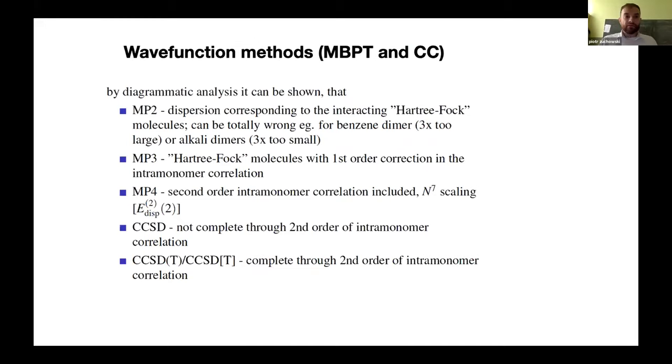So, to what extent is dispersion present in many-body perturbation theory? We have variational theory and coupled cluster. In MP2, the dispersion corresponds to the monomers which are described by Hartree-Fock model, which means that the dispersion energy at this level is very poor. So, it can be totally wrong, for example, for benzene dimer or for alkali dimers, where it's either strongly overestimated or strongly underestimated. MP3 actually doesn't improve the dispersion by a lot, because it still corresponds only to essentially the intramonomer correlation.